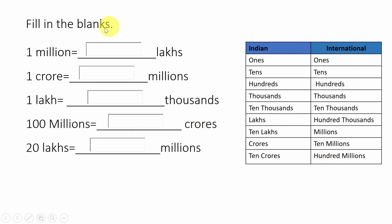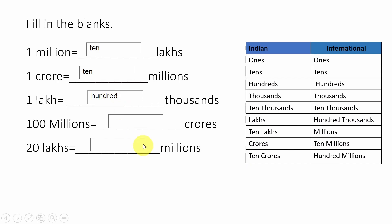Let us do this exercise also — these are all direct questions. Fill in the blanks. First: one million equals how many lakhs? From the international chart, one million equals ten lakhs. Next: one crore equals how many millions? One crore equals ten millions. Next: one lakh equals how many thousands? One lakh equals hundred thousands. Next: hundred millions equals how many crores? Hundred millions equals ten crores.